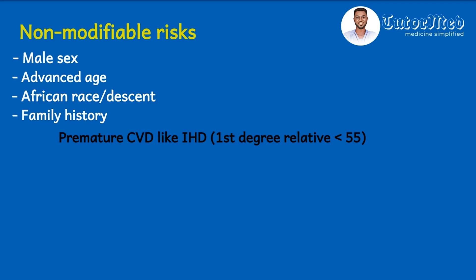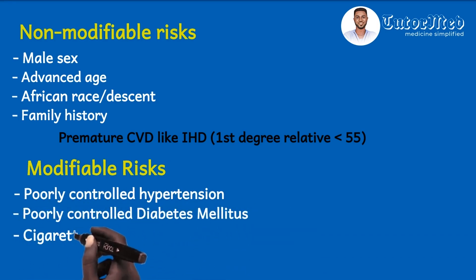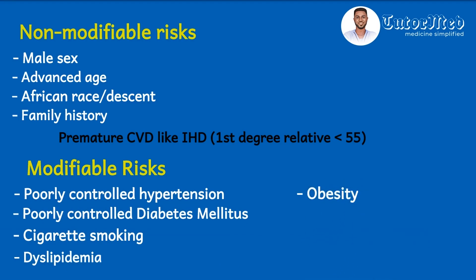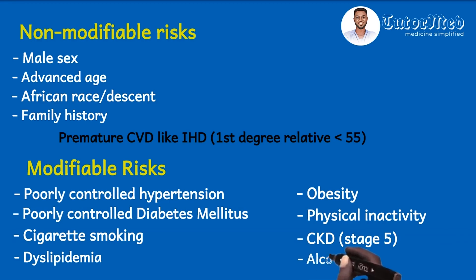For the modifiable risk factors, we have poorly controlled hypertension, poorly controlled diabetes mellitus, significant cigarette smoking, dyslipidemia, obesity defined as BMI more than 30, physical inactivity, chronic kidney disease especially end-stage kidney disease stage five, and alcohol abuse — just to mention a few.